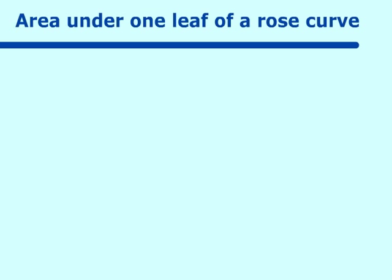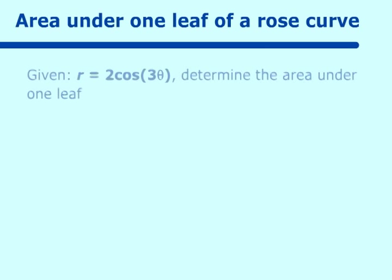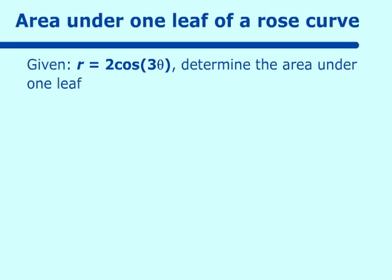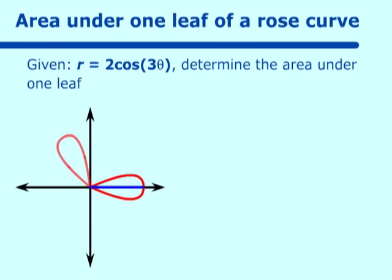Area under one leaf of a rose curve. Given r equals 2cos(3θ), determine the area under one leaf. Well, the graph of this has the first leaf sitting on the x-axis because it's cosine and it's 2 units long, and then because it's 3θ, we have 3 leaves. So there's the second leaf, there's the third leaf. Now the only other thing we need to do is determine what angle it takes for us to complete one graph.